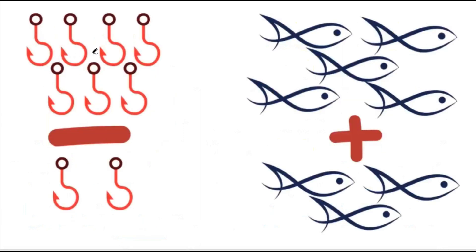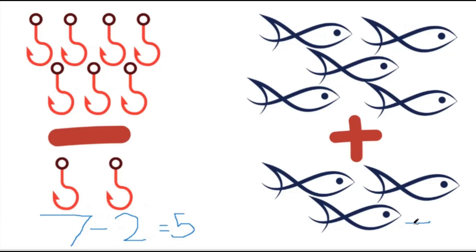Let's look at another example. Here we have fishing hooks and fish. One, two, three, four fishing hooks. And we count the fish: one, two, three — this will give us eight. So we have five fishing hooks and eight fish.